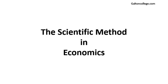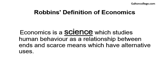Now let's turn our attention to the scientific method in economics. Robbins' definition of economics is that economics is a science which studies human behavior as a relationship between ends and scarce means which have alternative uses.